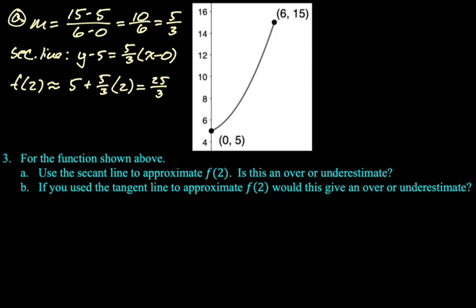So now if you look at the picture, you can see that's our secant line. It's just going through two points. Obviously, the secant line is above the function. So if I use the secant line to approximate a value of a function, I'm going to get a bigger value. So this is an overestimate.